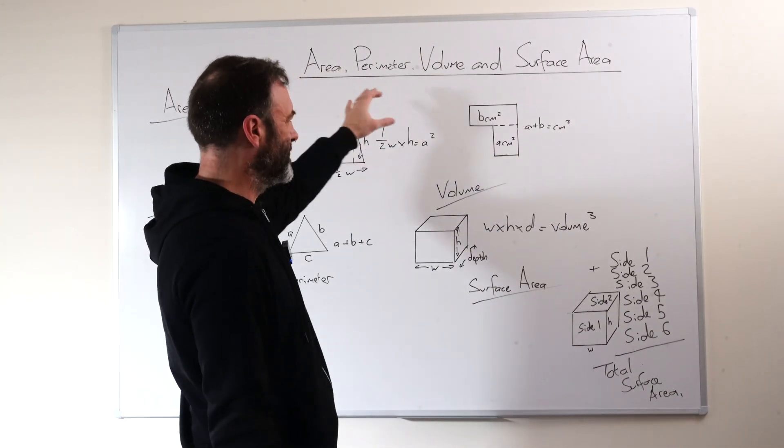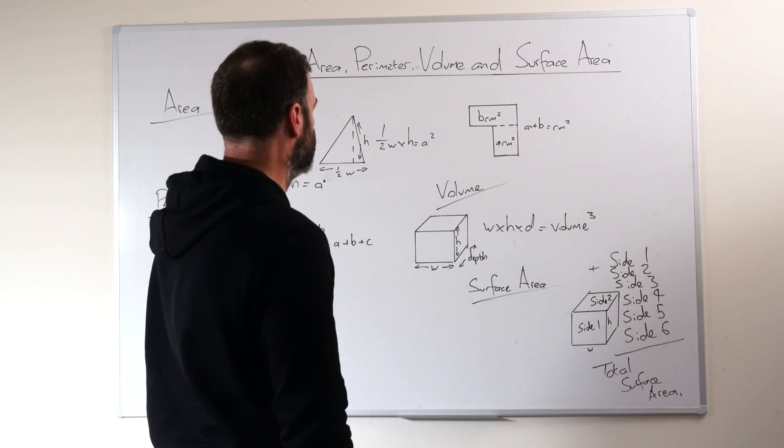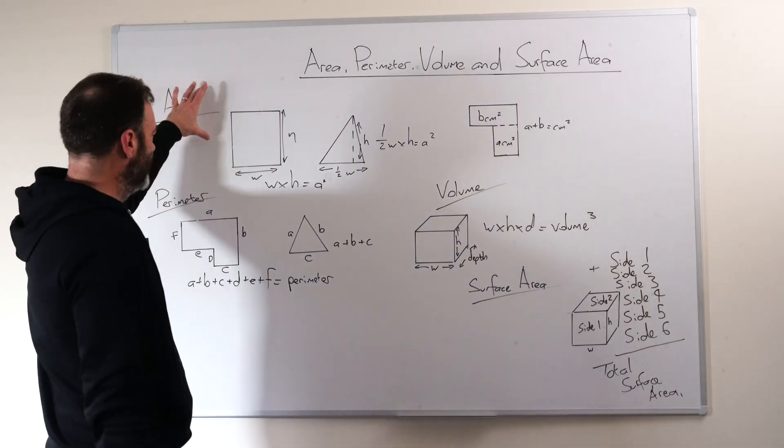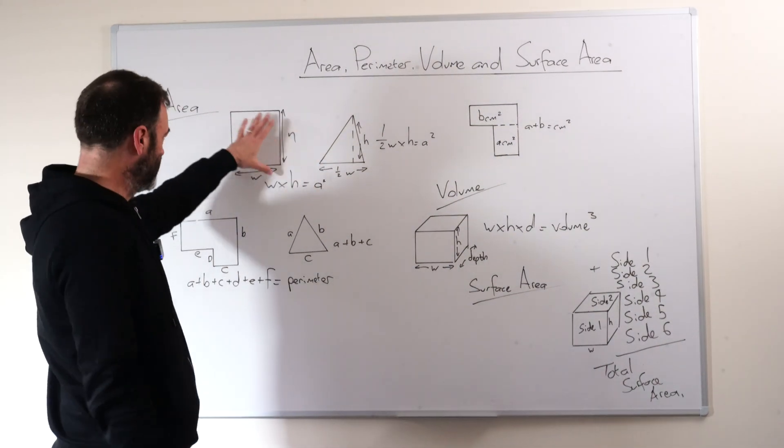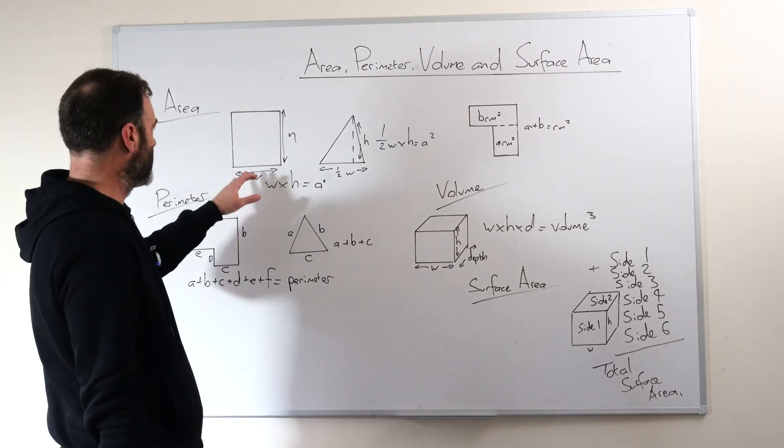Now, in some shape or form, one of these will usually come up in an 11 Plus entrance exam, so it's worth knowing all of these. Area is, in terms of a rectangle or square, very easy for kids to understand. It's height times width.